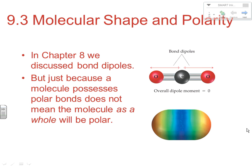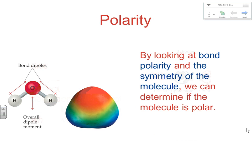We look at orbitals within atoms in previous chapters, and in this chapter we're going to look at how those orbitals change when we form molecular sharings. Now in chapter 8 we discussed bond dipoles — polarity within bonds. Just because a molecule possesses polar bonds does not mean that the molecule as a whole will be polar. By looking at bond polarity and the symmetry of the molecule — both are important — we can determine if a molecule is polar.